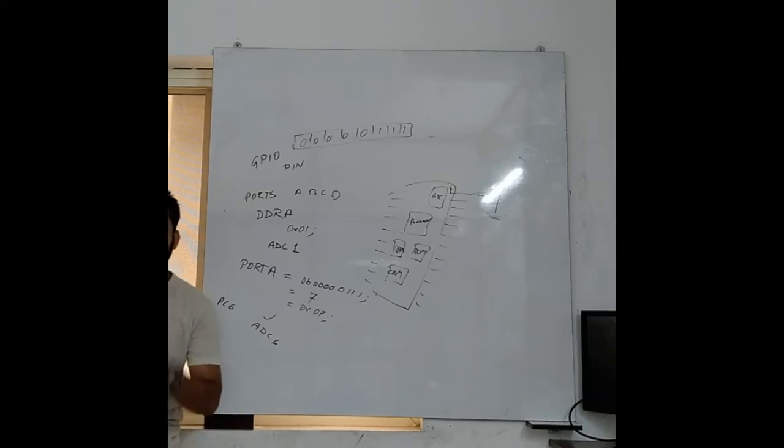So ADC is used when we want to convert analog signal to digital. Let's say you have a varying signal 0 to 5 volts.